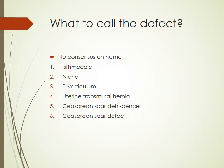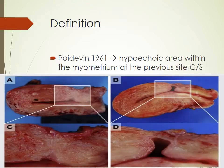What to call this defect has always been an issue. Currently there's no consensus. We've got terms like isthmocele, niche, diverticulum, uterine transmural hernia, caesarean dehiscence, and also caesarean scar defect. For the sake of this presentation, we'll be talking more about the caesarean scar defect.